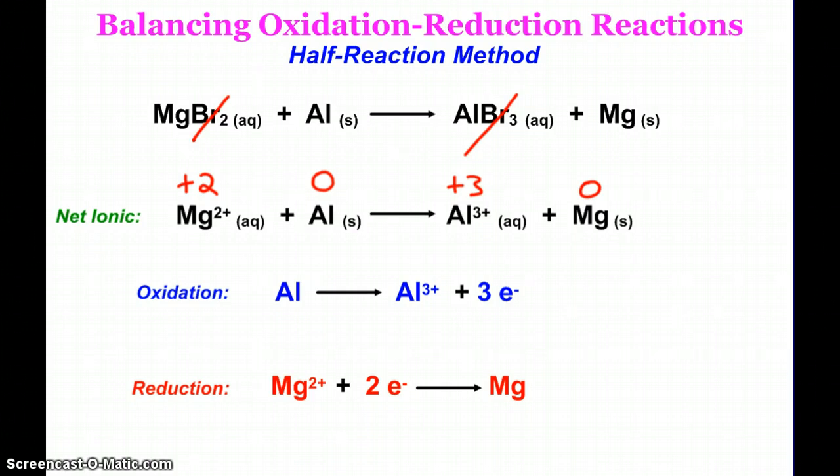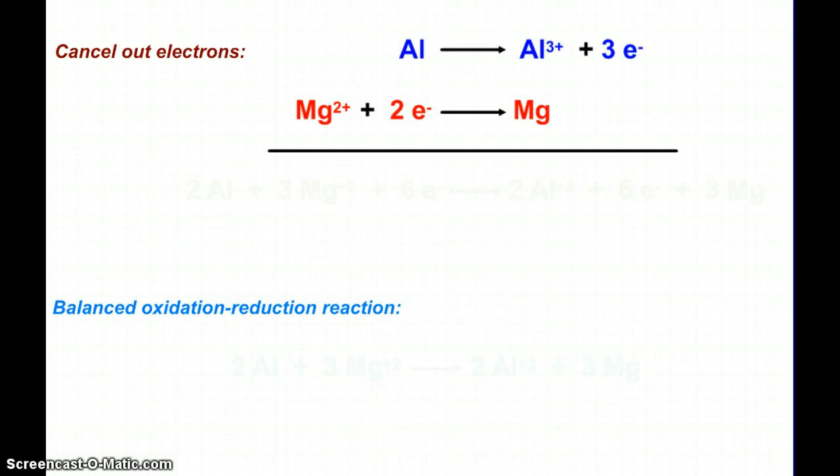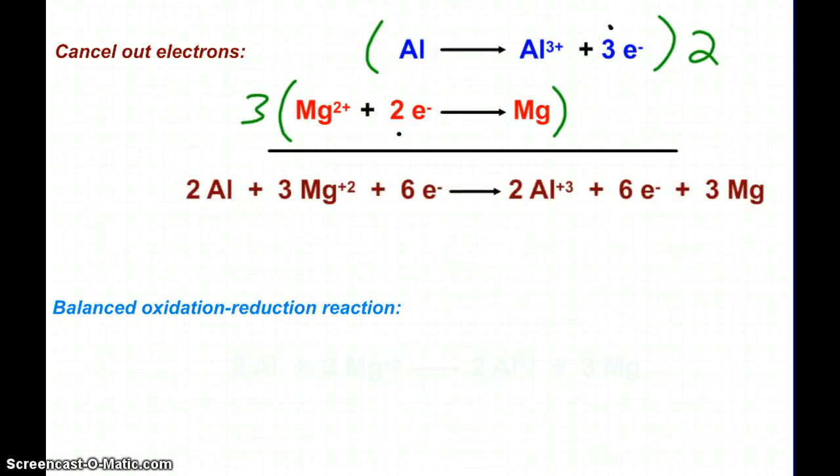Now that I see my two half reactions, I need to cancel out my electrons before I can get to my balanced oxidation reduction reaction. So I line up my two half reactions, and I need to get rid of the electrons. So I have to have the same number of electrons on both sides. Well, three coming out, two going in, the three two fix is with the least common multiple of six. So what I have to do is multiply my top reaction by two, and my bottom reaction by three. And when I do that, I end up with two aluminums plus three of the magnesium ions plus six electrons, making two of the aluminum ions, six electrons, and three magnesiums. I can then cancel out my electrons and end up with my balanced oxidation reduction reaction.